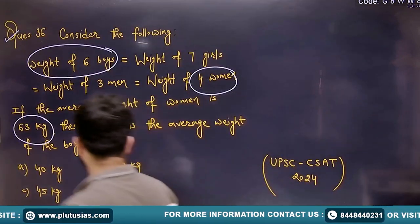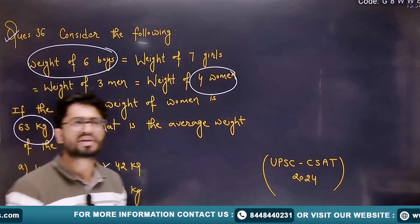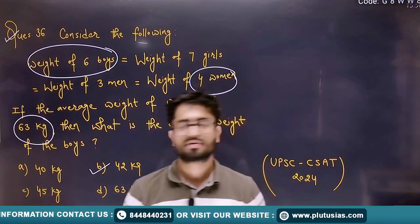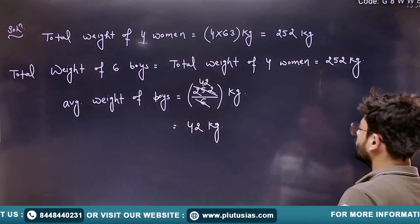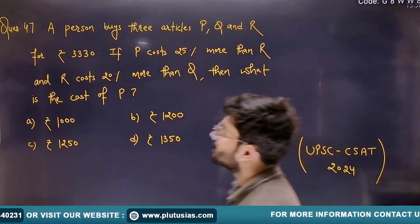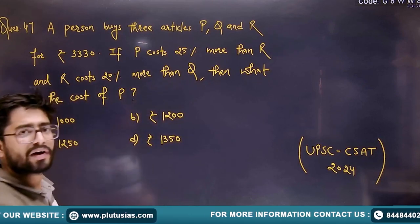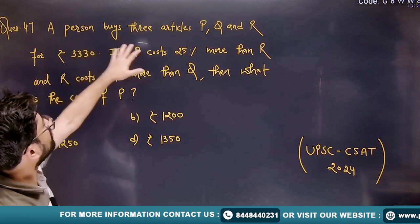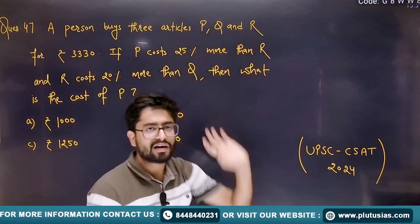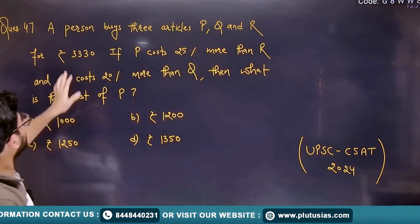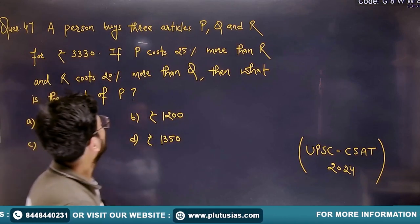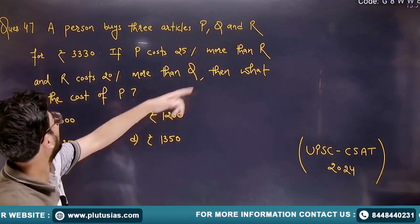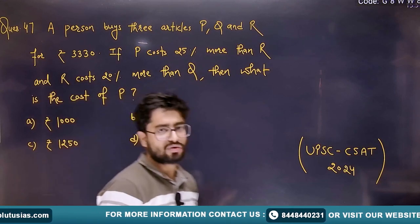Option B is the correct answer — 42 kg is the average weight of boys. Very simple question. Now let's discuss the next question, which is question number 47 from your 2024 paper. It says: a person buys 3 articles P, Q, and R for ₹3,330. P costs 25% more than R, and R costs 20% more than Q.